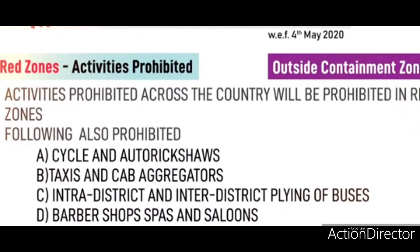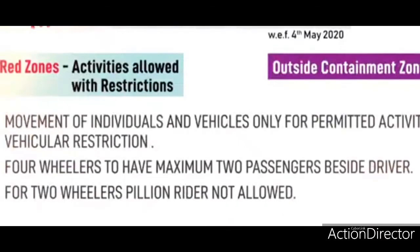In red zones, and specifically in areas outside of containment zones, activities prohibited across the country are naturally prohibited here as well. Additionally prohibited are cycle rickshaws, auto rickshaws, taxis and cab aggregators, intra-district and inter-district plying of buses, and barbershops, spas, and saloons.